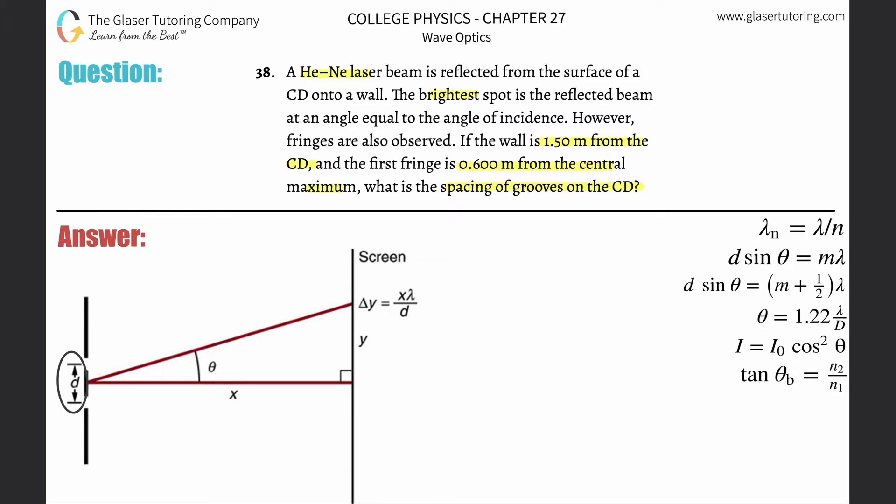All right, so we're going to assume that the spacing of grooves on the CD here is d. They tell us the X value or the distance between, assume the CD is over here, and this is then the wall. So they tell us the distance X is 1.50 meters. They also told us the distance here, the distance between the fringe and the central max, that Y is equal to 0.6 meters.